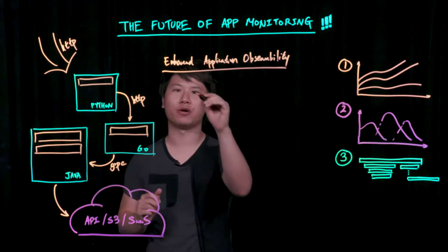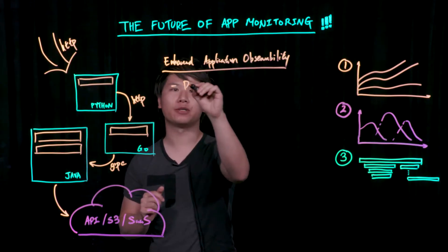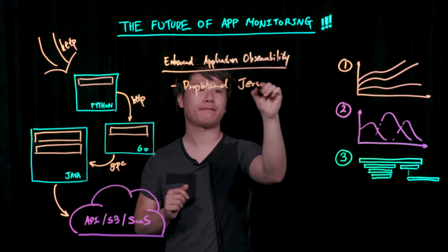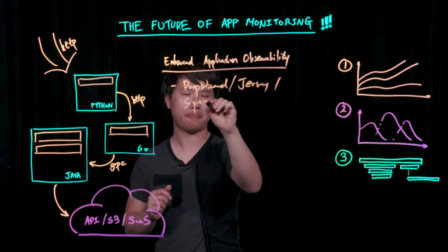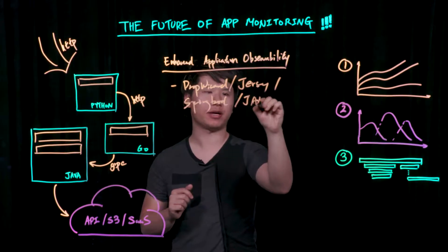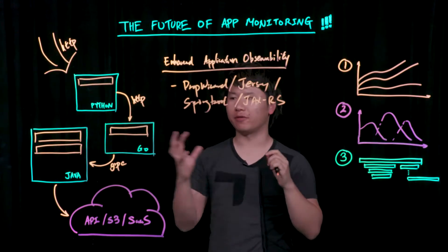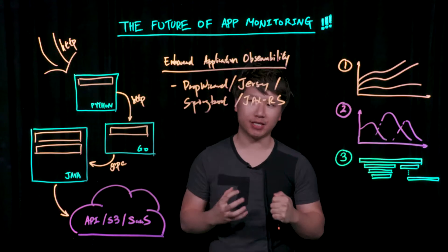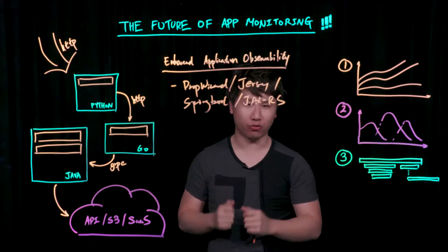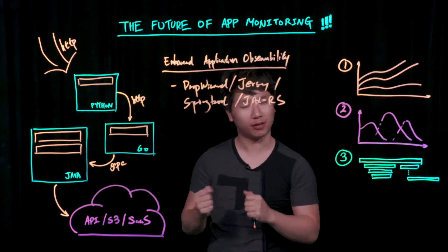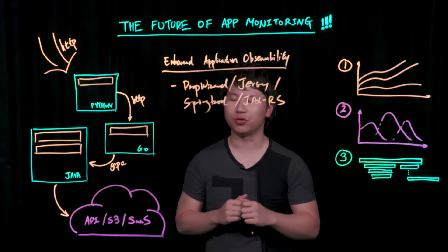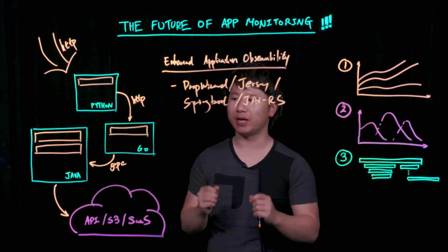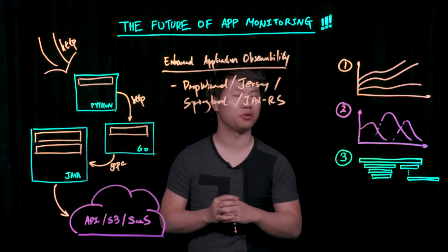For example in Java, you could be using DropWizard, you could be using Jersey, you could be using Spring Boot, or just generic JAX-RS. These are very common microservice components you'd use to build your application. What we offer is an SDK that you put into your own code — we're not doing any kind of bytecode instrumentation — put in the SDK, put in about 10 lines of code, recompile your application and deploy it.